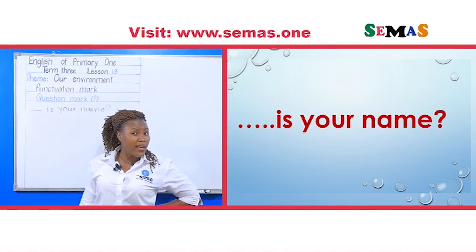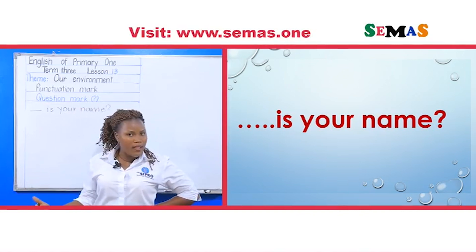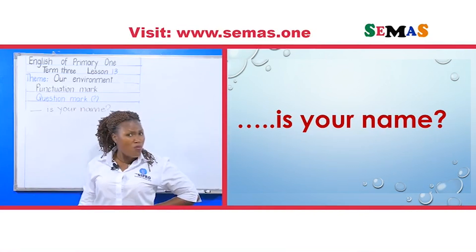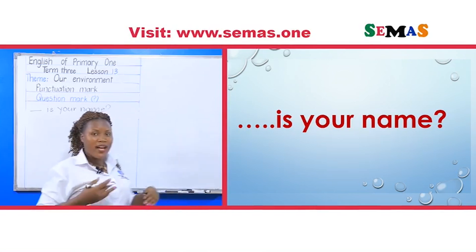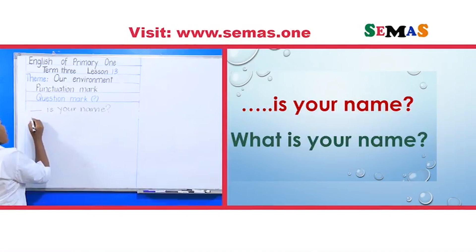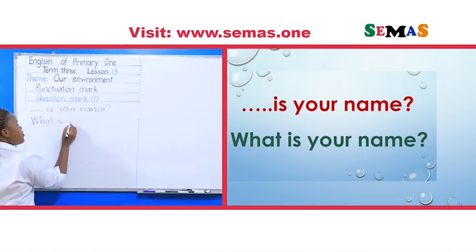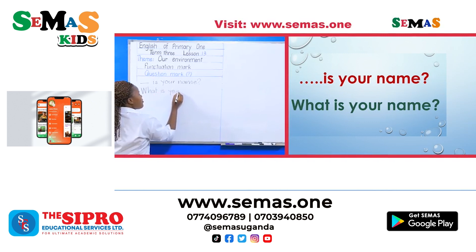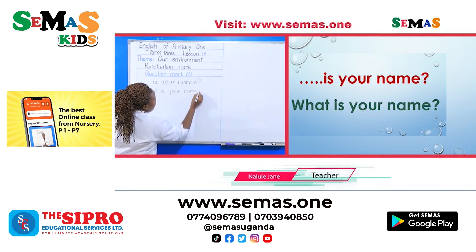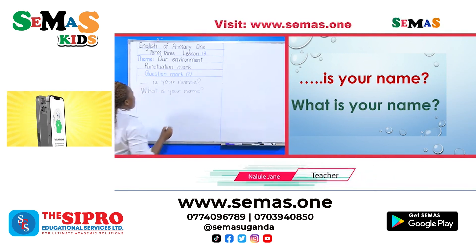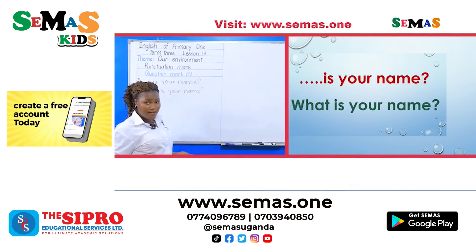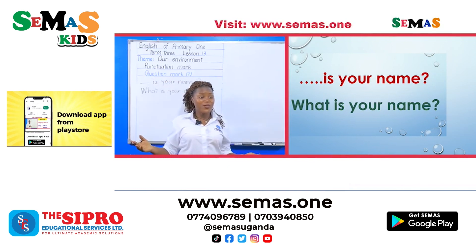Can you ask 'where' — a place? No. 'Why is your name'? No. So the answer is 'what.' When we write 'what,' we begin with a capital W. The suitable word is 'what.' What is your name? Don't forget the question mark — 'What is your name?'